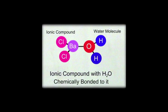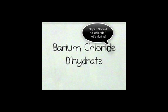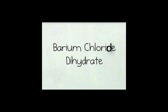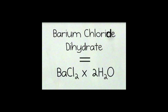A way to identify an ionic compound as a hydrate is the word hydrate in the name. For example, barium chloride dihydrate can be identified as a hydrate because the word hydrate follows the name of the ionic compound that the water molecules were combined with. Barium chloride dihydrate is written as BaCl₂ · 2H₂O.